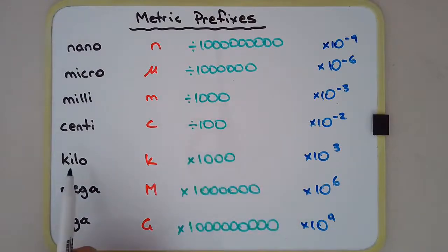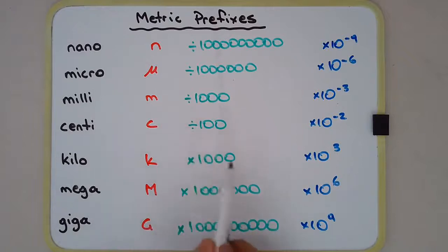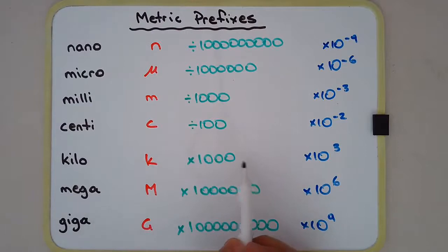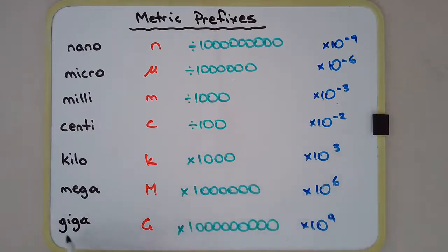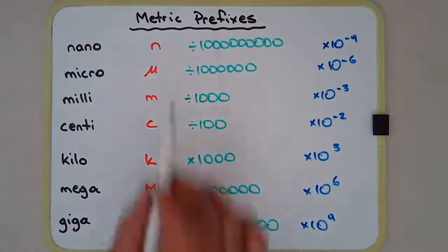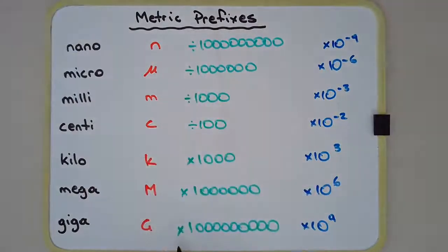Notice that with kilo, mega, and giga, instead of being a division it's a multiplication. Kilo means a thousand, so a kilogram means a thousand grams. Mega means a million, and giga is a billion. So you can see that nano and giga are very similar — the same number, but instead of division it's multiplication.